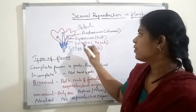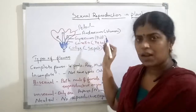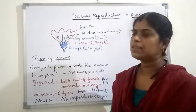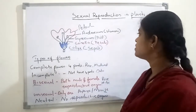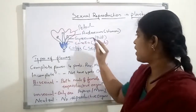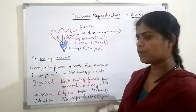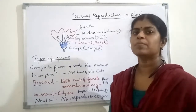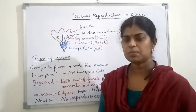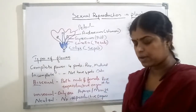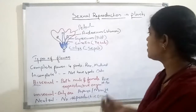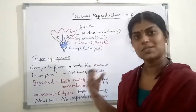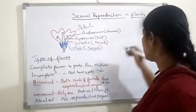Inner to the corolla, the main reproductive part of the flower will be there, and that is known as the androecium. Androecium is the main reproductive part of the flower, and androecium is made with stamens.